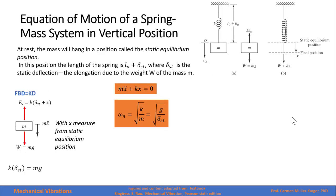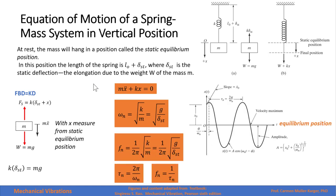For a spring-mass system in vertical position, x is measured from the static equilibrium position and the spring is already elongated by the static deflection. Therefore k times the static deflection equals the weight. We can write the natural frequency either as the square root of k over m, or as the square root of gravity divided by the static deflection. The system oscillates around the static equilibrium position, not around the unstretched length of the spring.